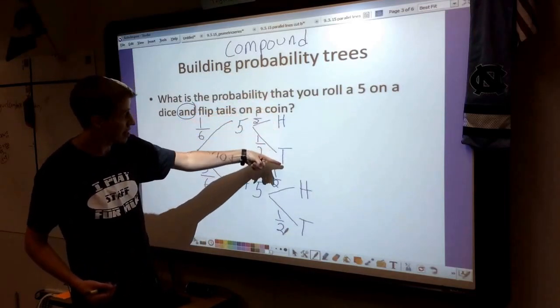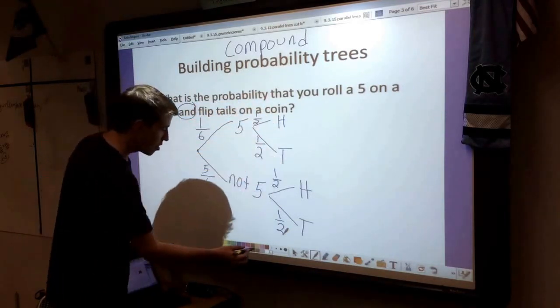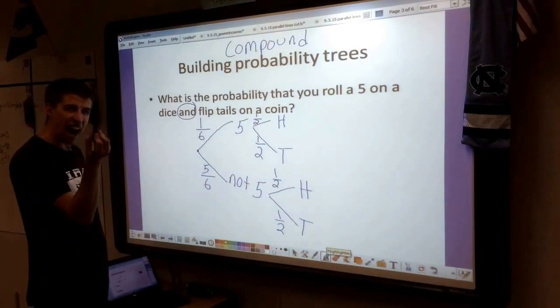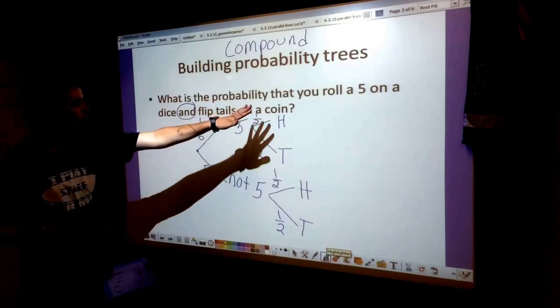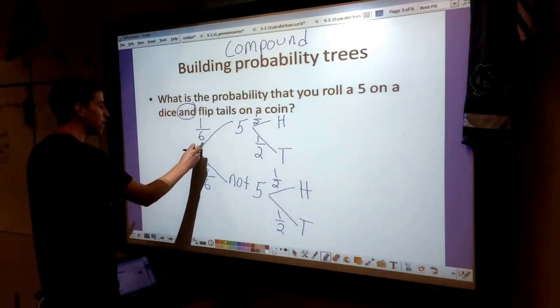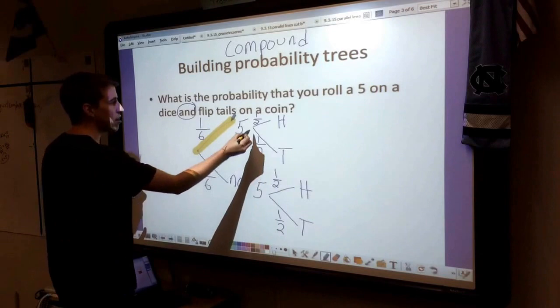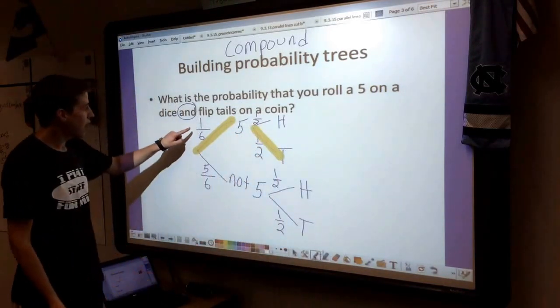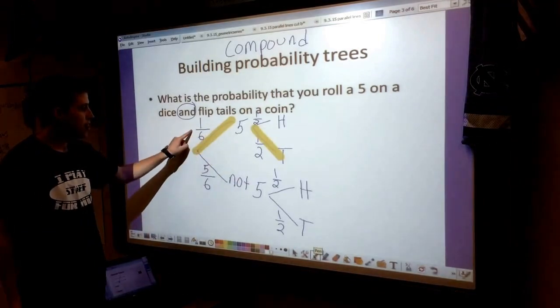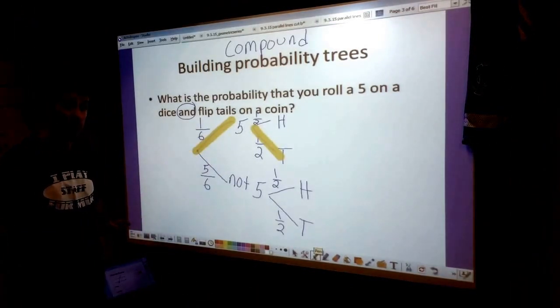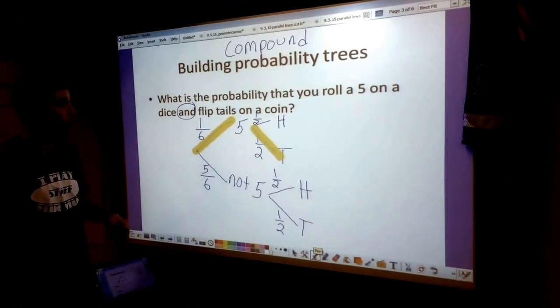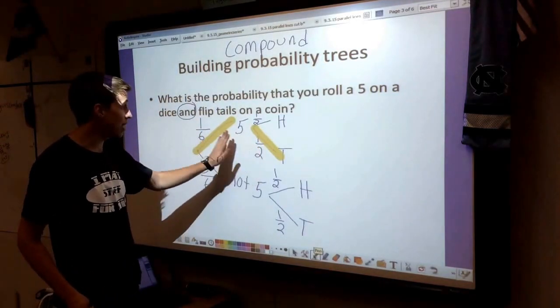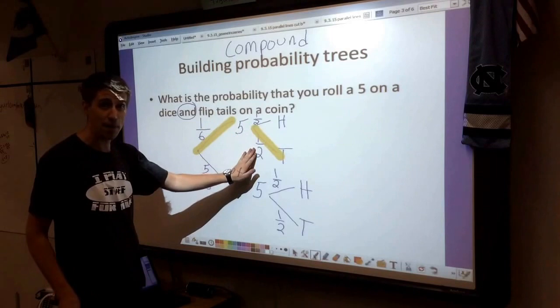Now we have all the fractions we need to find the compound probability that both rolling a 5 and getting tails happens. First, I'm going to highlight the trail of what I'm looking for: a 5 and then tails. I see both of my fractions here. When we find the compound probability, you multiply the chance of both events happening.